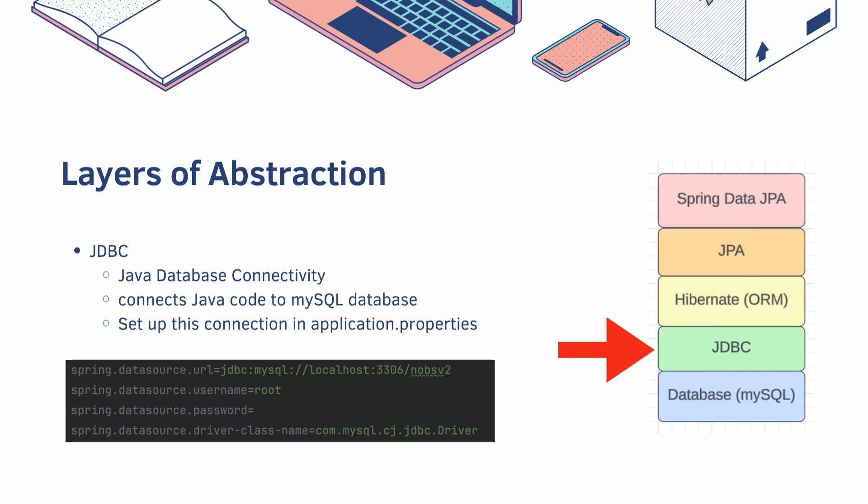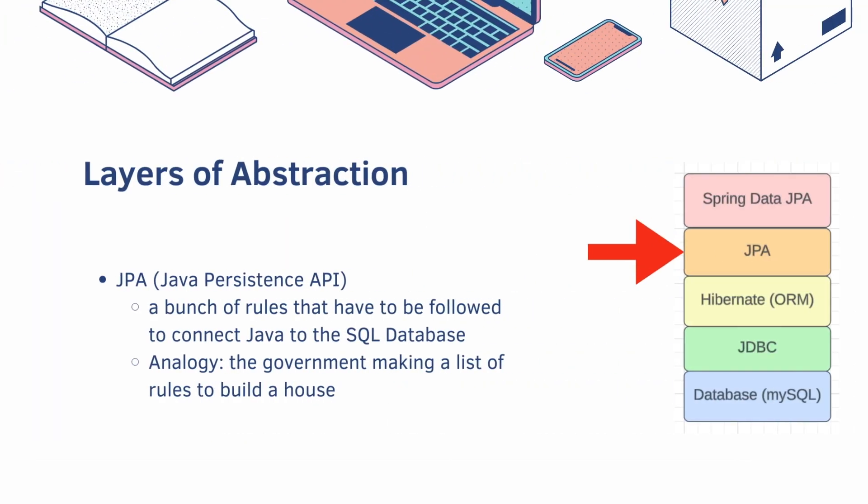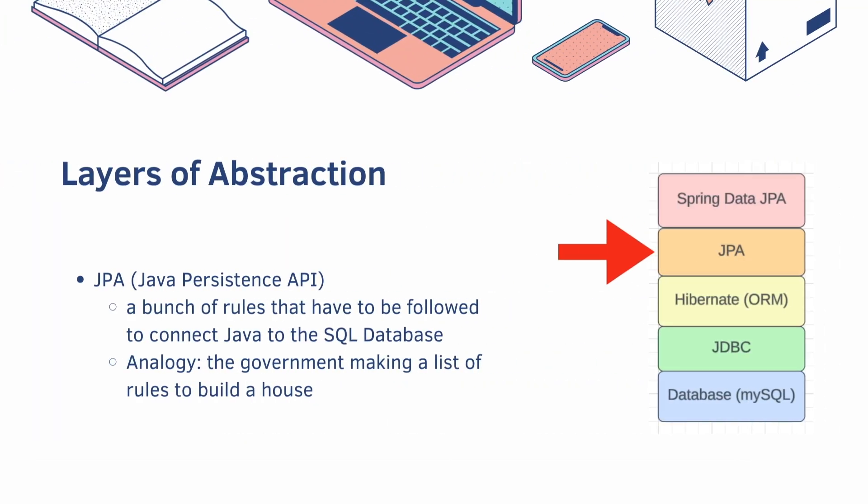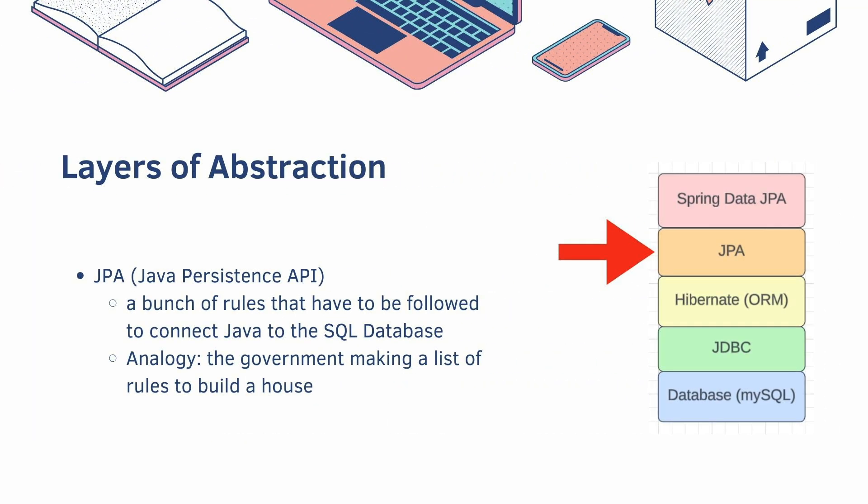Skipping Hibernate for a moment, let's talk about JPA. JPA stands for the Java Persistence API. This is basically a set of rules that must be followed to connect Java to the SQL database. My analogy is the government making a list of rules you have to follow when you build a house.